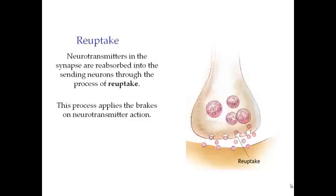Reuptake puts the brakes on — it shuts off the faucet. What happens if you prevent reuptake? The neurotransmitters stay in the synapse and keep causing that receiving neuron to fire, giving it a double dose of the message because the sender is still sending. The molecules have not been reabsorbed. Certain kinds of drugs inhibit the reuptake, essentially blocking it so that there's more neurotransmitter in the synapse.